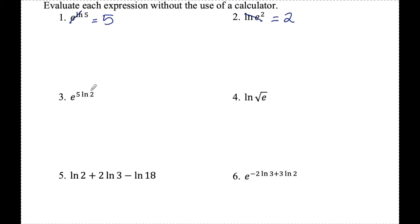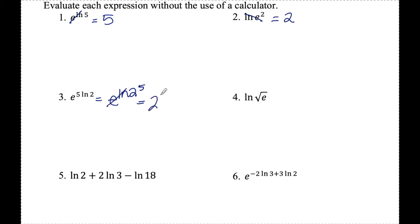Number three: e to the five ln two. So this five is kind of in the way — here the e and the ln need to be touching to cancel. Since the five is in the way, I need to move it before I can cancel. Using the rule that multiplication in front can become an exponent, I can rewrite this as e to the ln of two to the fifth. Now that my e and ln are touching, those cancel and I'm left with two to the fifth, which simplifies to just 32.